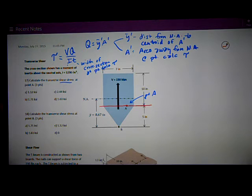So A prime is the area away from the neutral axis at the point where I'm calculating tau. So it's going to be the area of this triangle part, of this shape.